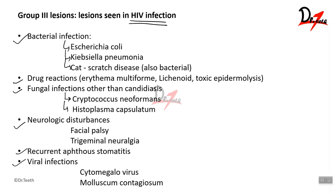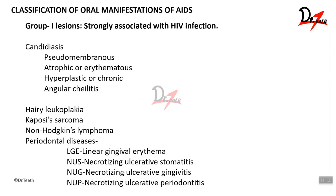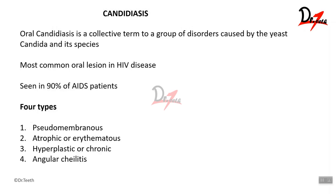Today we will be mainly concentrating on the Group 1 lesions, which are strongly associated with HIV positive infection. These include candidiasis, hairy leukoplakia, Kaposi sarcoma, and periodontal diseases.